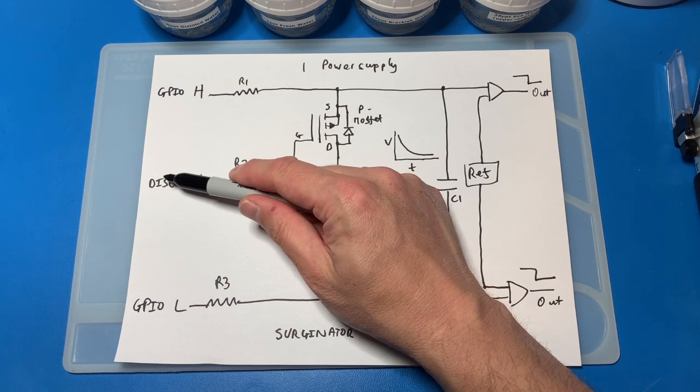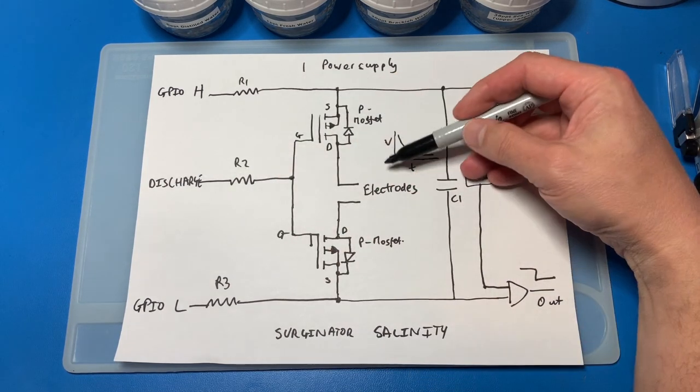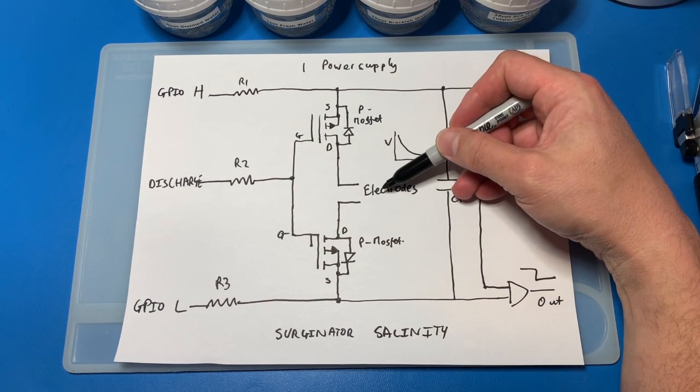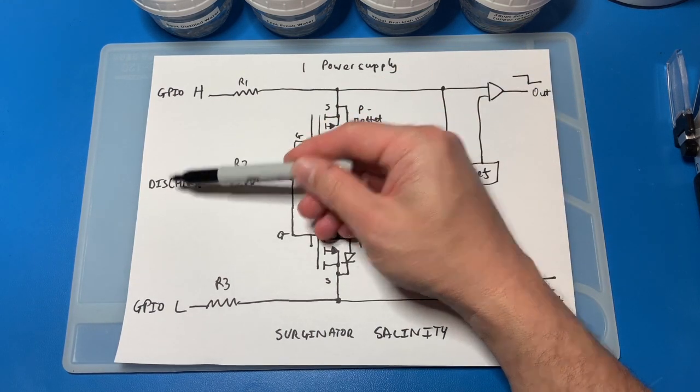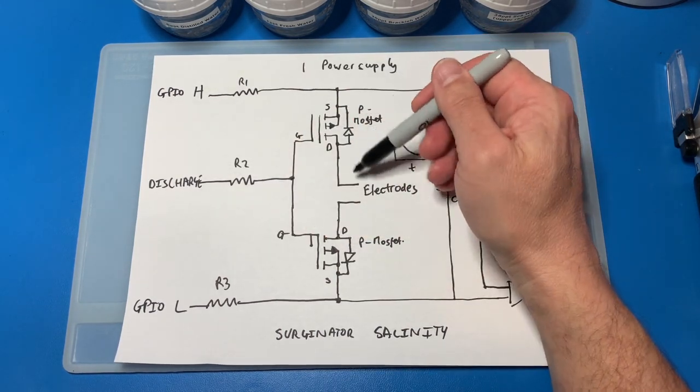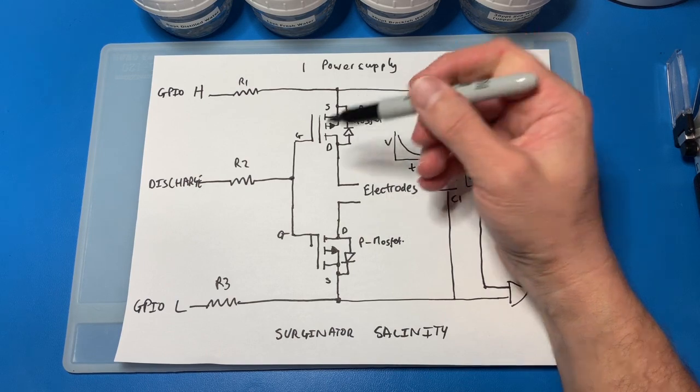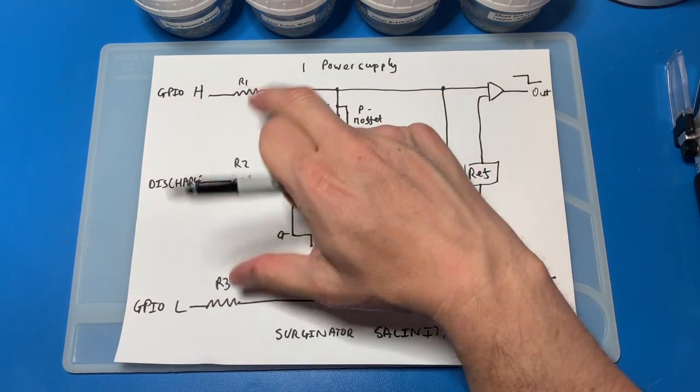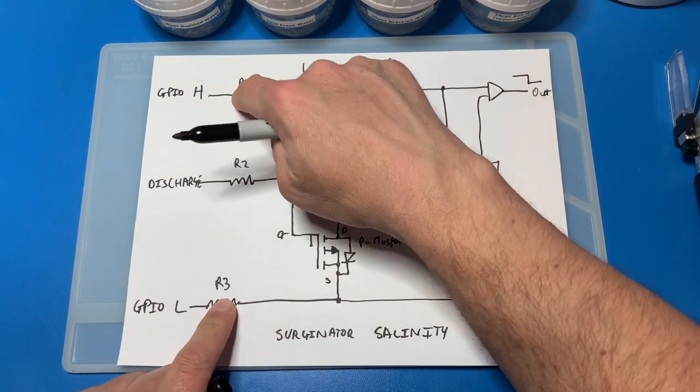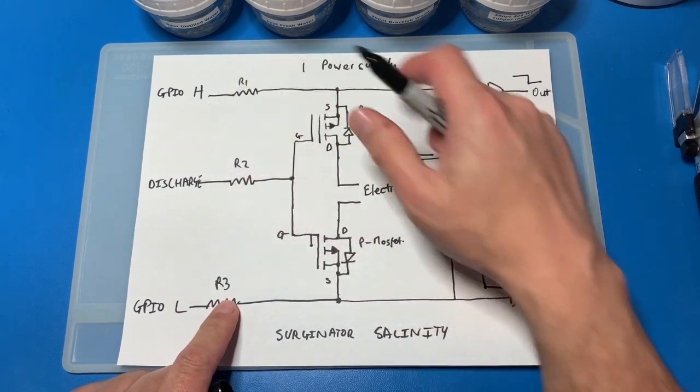So essentially I can put a high value on here and the electrodes are then isolated, and if I put a low value here then the current will flow through the electrodes. So the idea here is I'm going to use the two control lines here, which are GPIO lines coming out from a microcontroller.